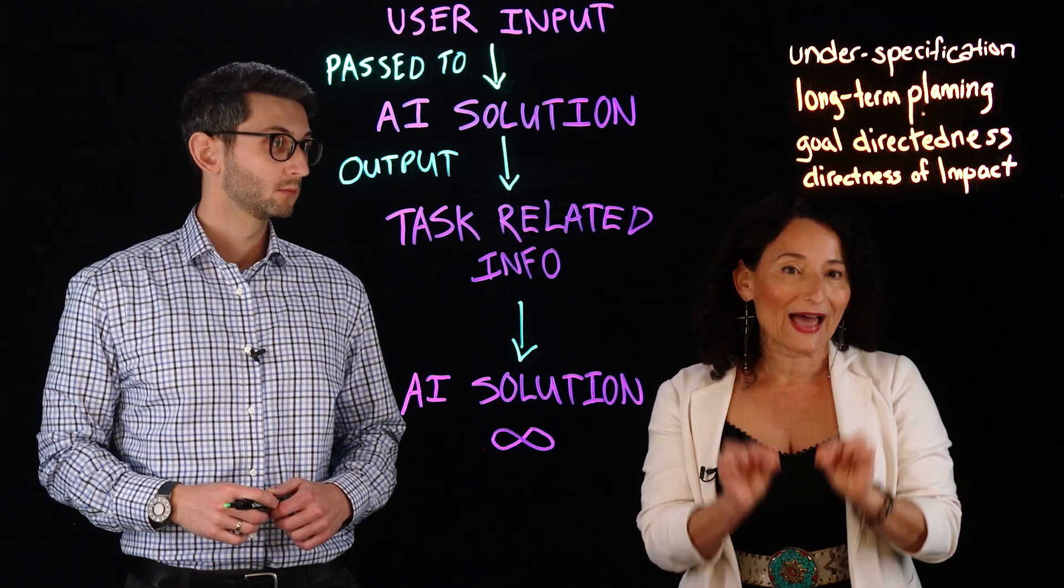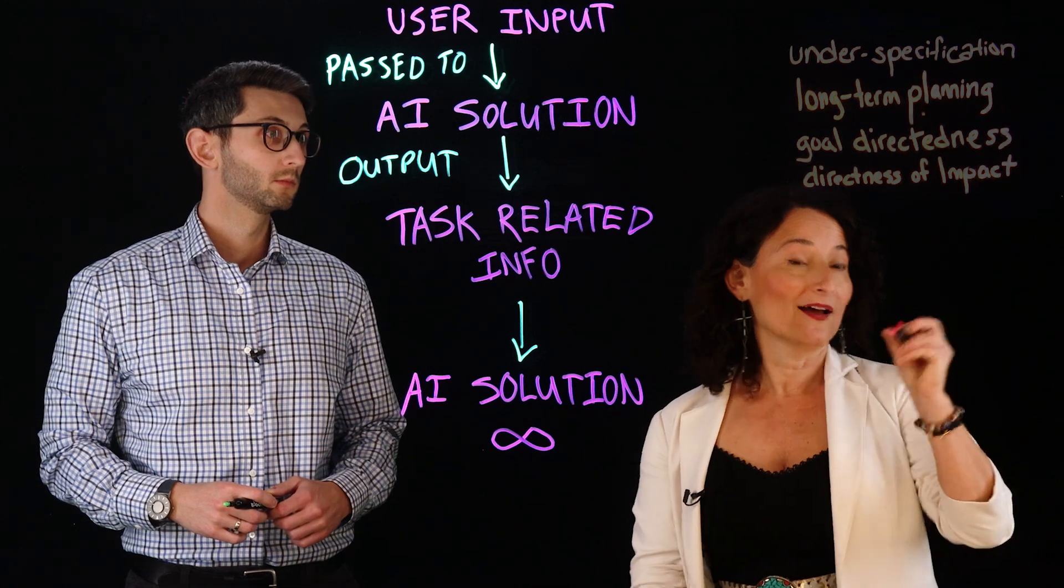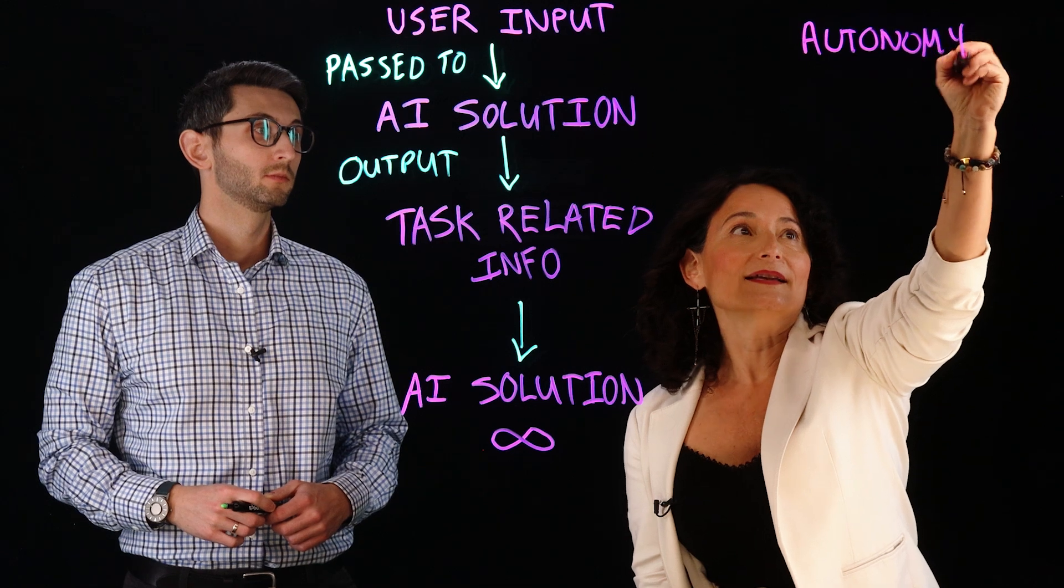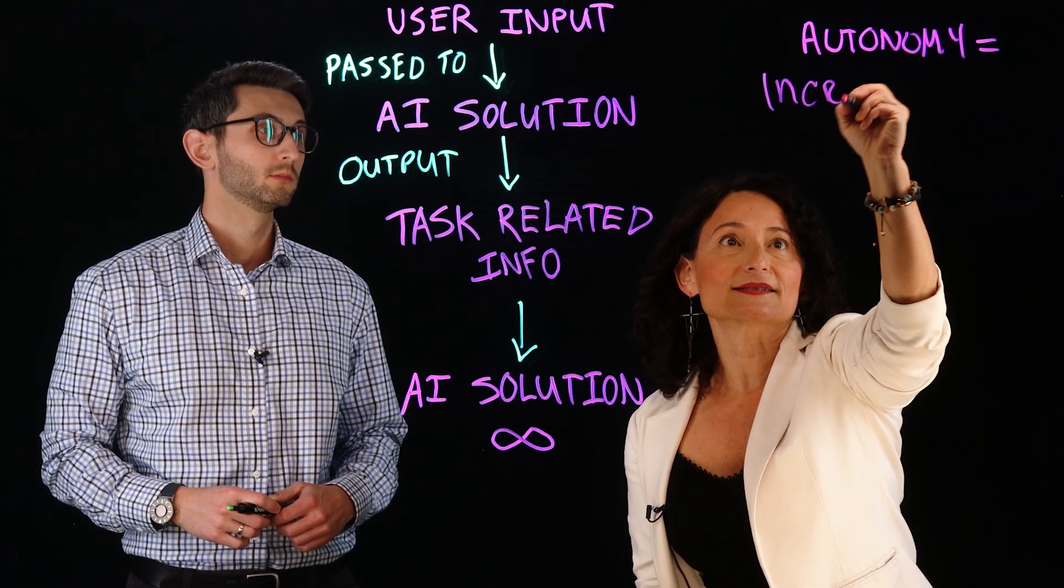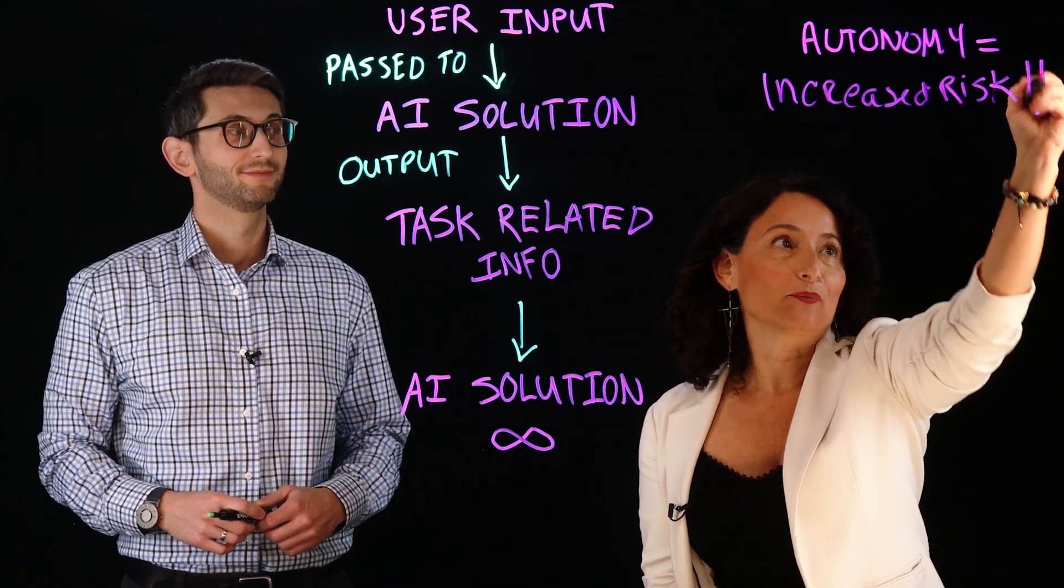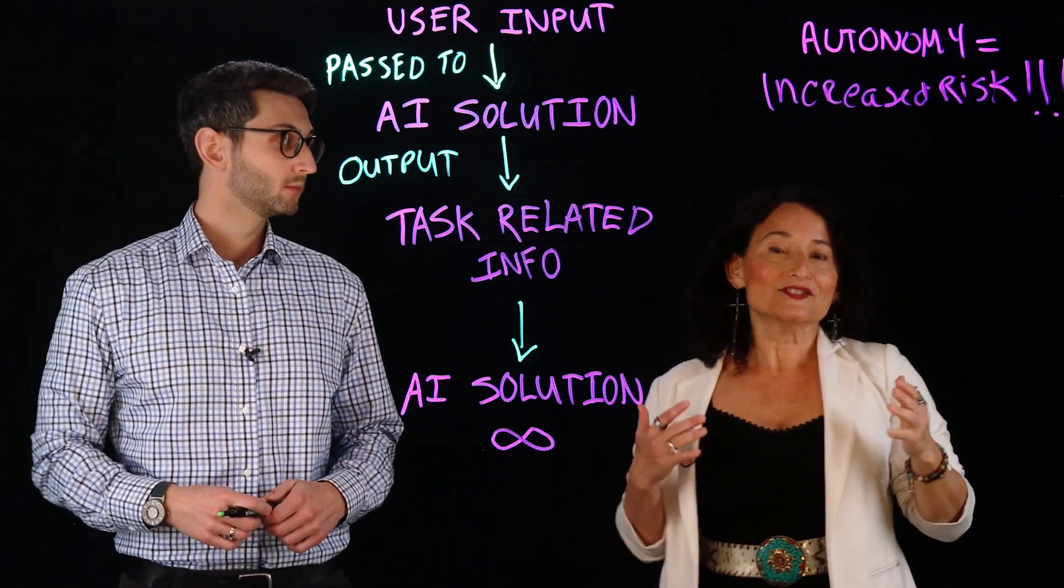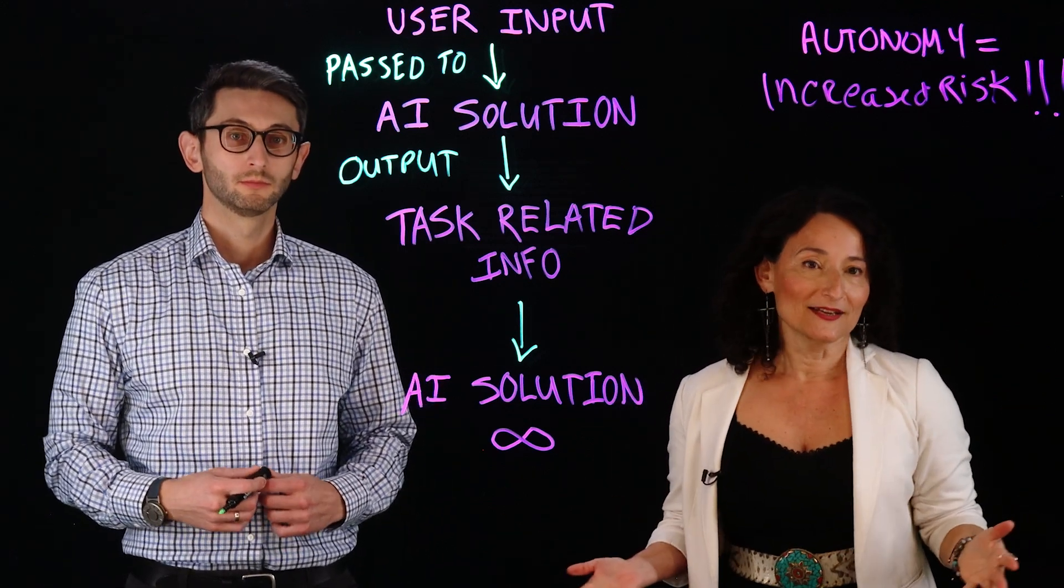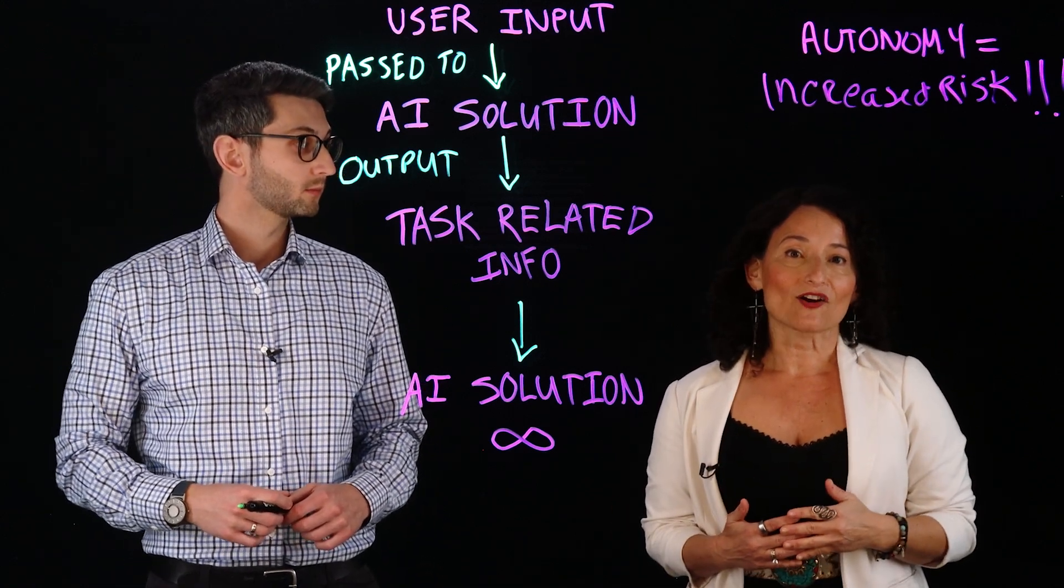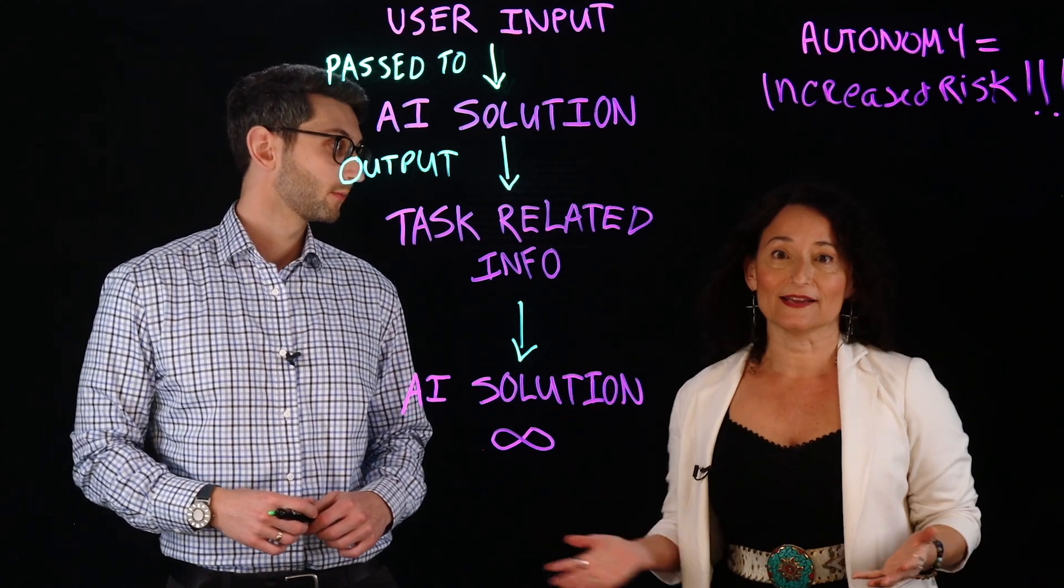Some of these systems operate without any human in the loop. So what I want you to remember is that autonomy itself is equal to increased risk. And I'm going to put three exclamation points. And that's the issue. As autonomy increases, so do risks like misinformation, decision-making errors, and security vulnerabilities. Many organizations are still catching up with the generative AI risks, and agentic AI just amplifies them.